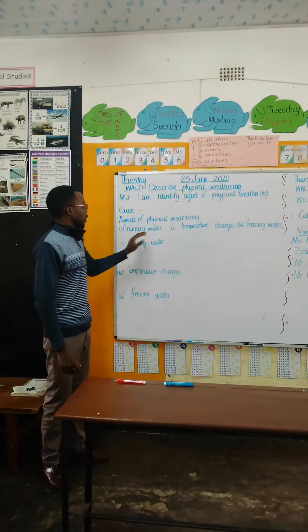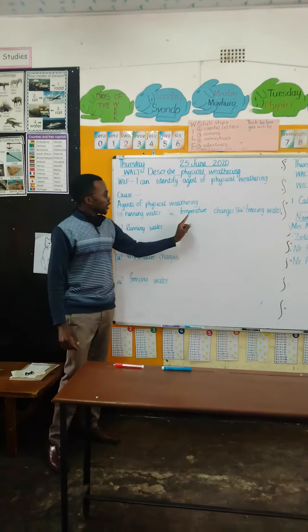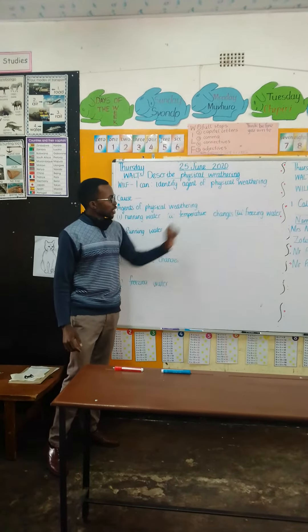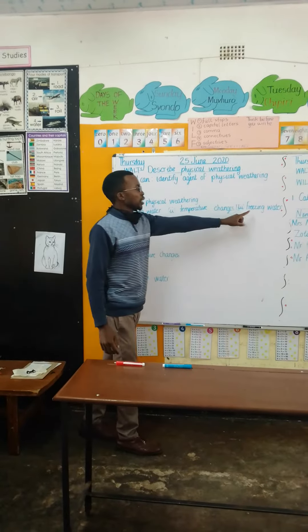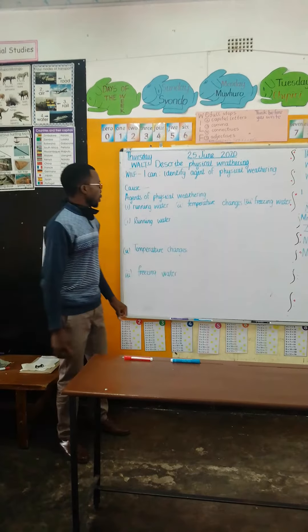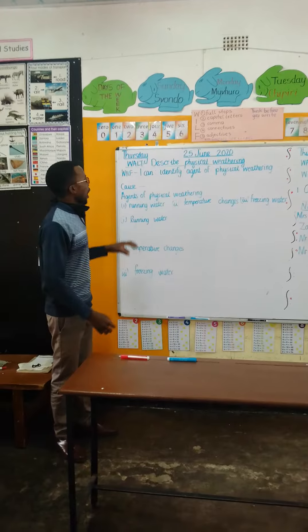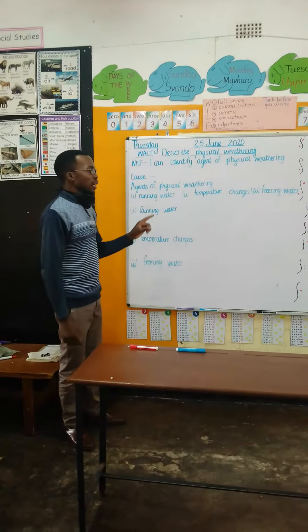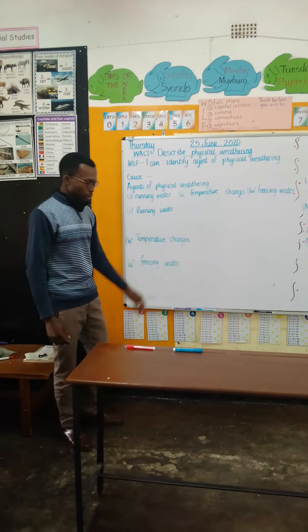The first one is running water. The second one is temperature changes. And the third one is freezing water. Now let me start by explaining how physical weathering is caused by running water.